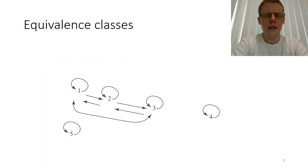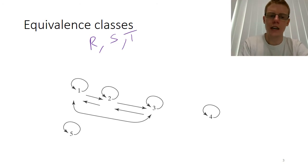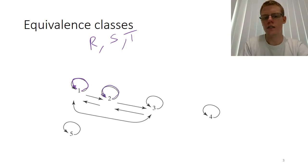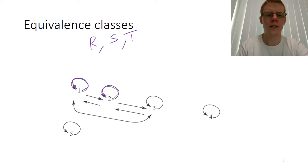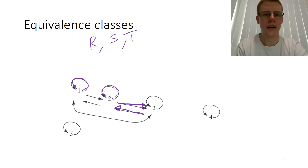An equivalence relation is any relation that is reflexive, symmetric, and transitive. Reflexive just means that elements in the set are all related back to themselves — those are the little loop backs. Symmetric means that any time we have, say, 2 related to 3, then 3 must be related back to 2, so every arrow that goes in one direction has to go back in the other.